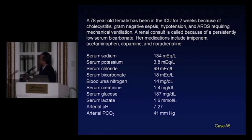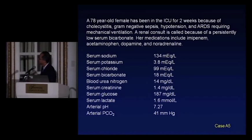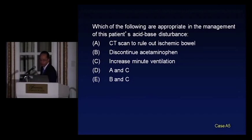A 78-year-old female has been in the ICU for two weeks with cholecystitis, gram-negative sepsis, hypotension, and ARDS. She's on mechanical ventilation. A renal consult is called for persistently low serum bicarbonate. Meds include imipenem, acetaminophen, dopamine, and noradrenaline. Bicarb 18, sodium 134, chloride 99, creatinine 1.4, lactate 1.6, pH 7.27, PCO2 41. Which of the following is appropriate: CT to rule out ischemic bowel, discontinue acetaminophen, increase minute ventilation, or A and C or B and C?